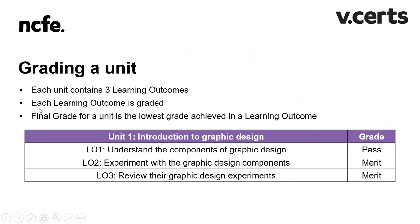After the assignment gives some further details on specific information that should be included, then the way the evidence can be presented — we've tried to keep this as open as possible. On the following page the grade descriptors are given, which is what the learners need to do for that grade and what the assessor will use when marking. Each unit consists of three learning outcomes and each learning outcome is graded. The final grade for the unit will be the lowest grade the learner achieved in a learning outcome. However, there is a compensatory grading system when combining all the units at the end.